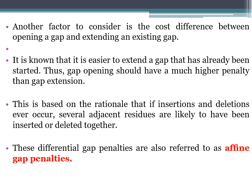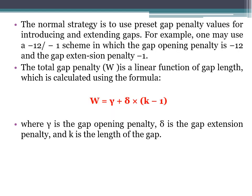This is based on the rationale that if insertions and deletions occur, several adjacent residues are likely to have been inserted or deleted together. These differential gap penalties are referred to as affine gap penalties. The normal strategy is to use preset gap penalty values for introducing and extending gaps. For example, one may use the scheme of minus 12 and minus 1: subtract minus 12 from the total score for opening a gap, and subtract minus 1 for each extending gap.